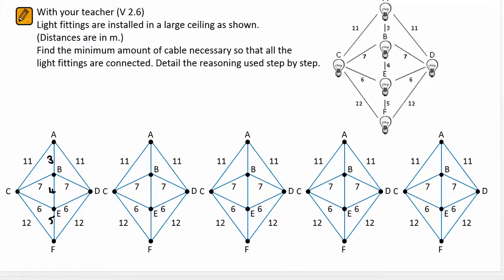In V2.6 you're asked to use Prim's algorithm in order to work out the minimum amount of cable so all these light fittings are connected. You can detail this step by step, but I tend to find it easier just doing it all at once. I'm going to start at point C — growing, the only one there is E, and then the next shortest is the 4, then the 3, and then down to the 5.